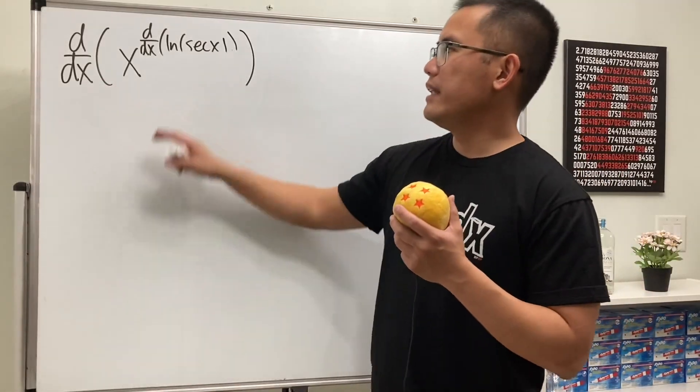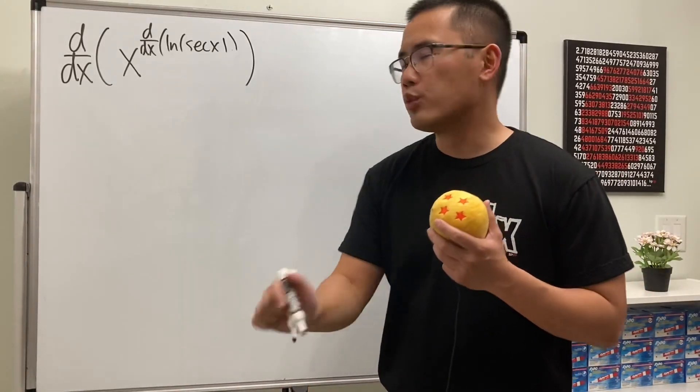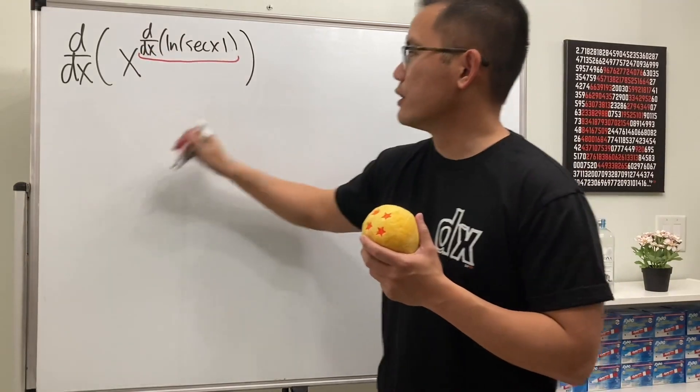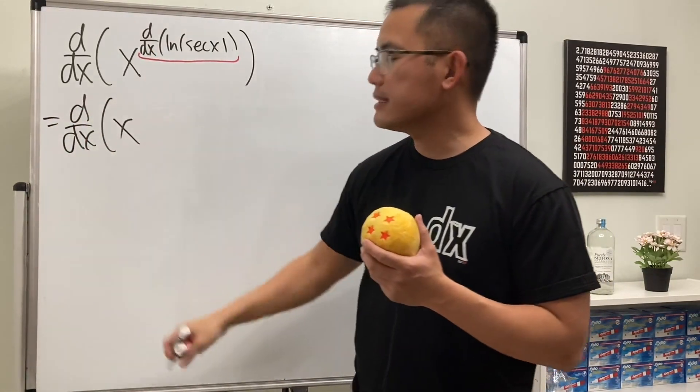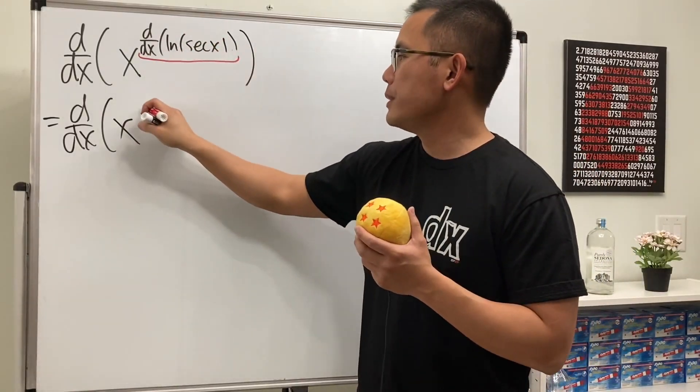What if we are trying to take the derivative and the power right here is also a derivative? Don't worry, we do this inside. I also do this first, so this right here is the same as the derivative. And then of course the inside is just x, raised to this power, which is going to be...